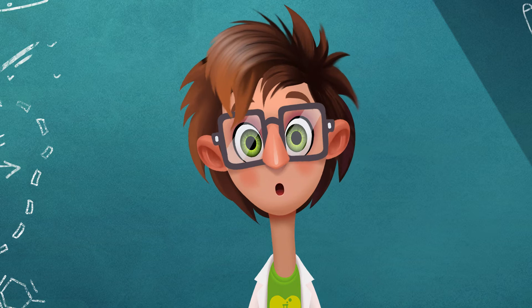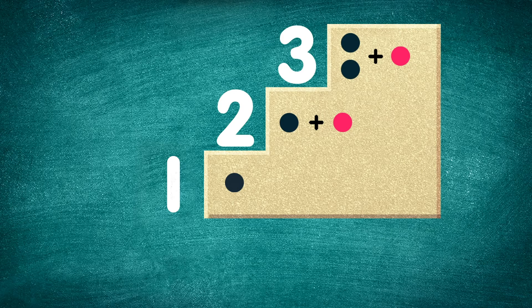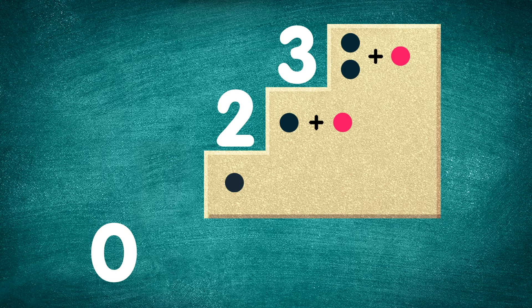Can you imagine that? Or, if you, Coopie, are standing on the floor in front of some steps, you're standing on step number zero, because you're not on a step yet. After zero comes one. That means one is one more than zero.